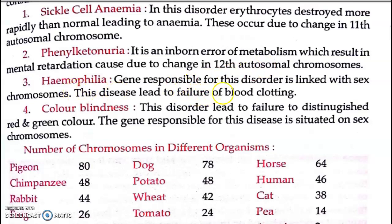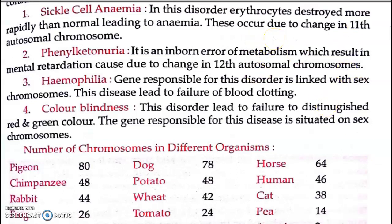The third disorder is hemophilia. The gene responsible for this disorder is linked with the sex chromosome. Unlike phenylketonuria, which is related to autosomal chromosomes, hemophilia is related to the sex-linked chromosome — specifically it is an X-linked recessive disorder. This disease leads to failure of blood clotting. The gene responsible for blood clotting is present on the X chromosome.